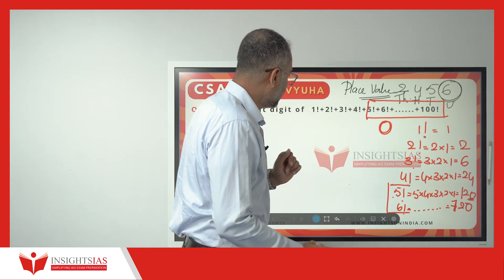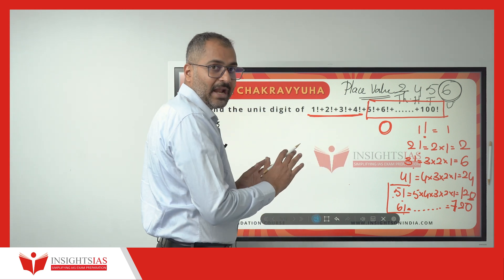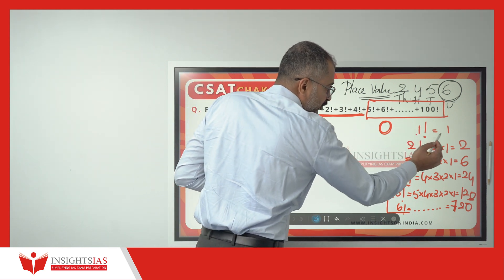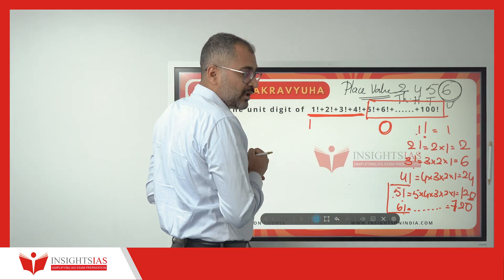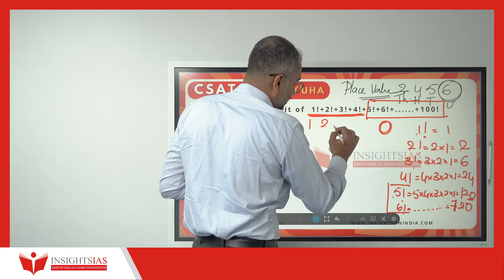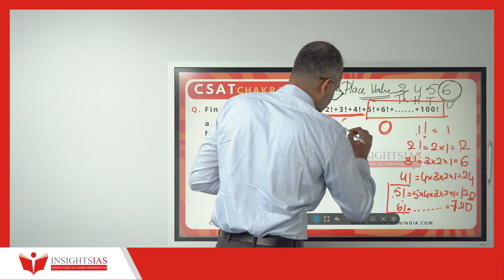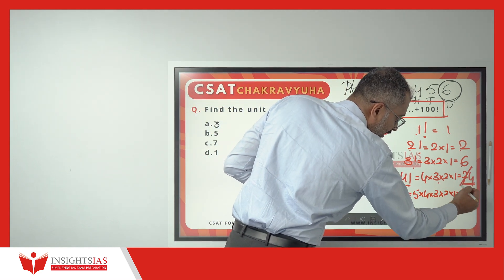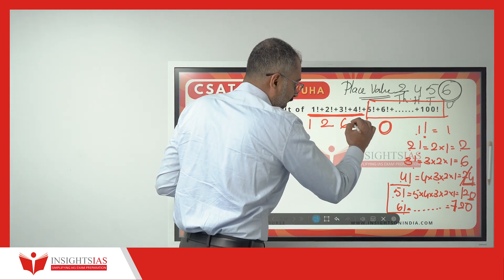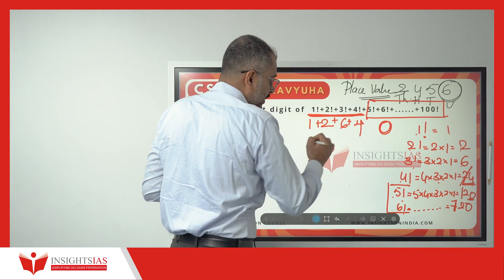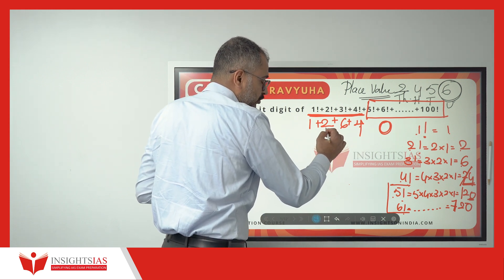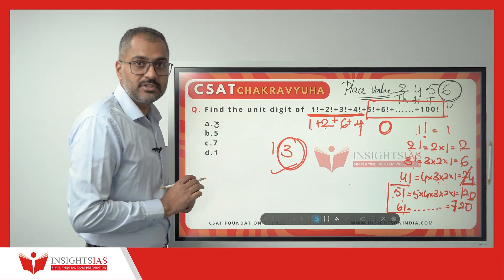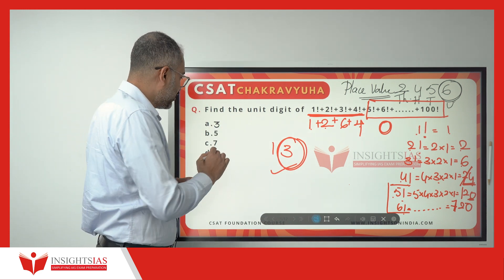So what remains is from 1 to 4 factorial — just add the unit digits from 1 to 4 factorial. 1 factorial unit digit is 1. 2 factorial is 2. 3 factorial is 6. And 4 factorial is 24, but we do not require 24 — take only the unit digit, which is 4. If I add all this: 6 plus 4 is 10, plus 2 is 12, plus 1 is 13. Take only the unit digit, which is 3. So the answer is Option A.